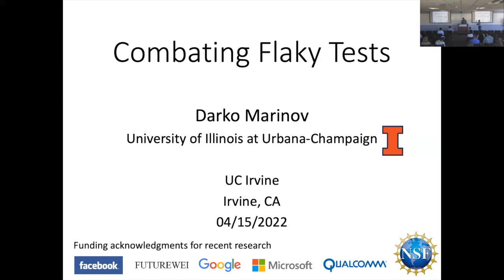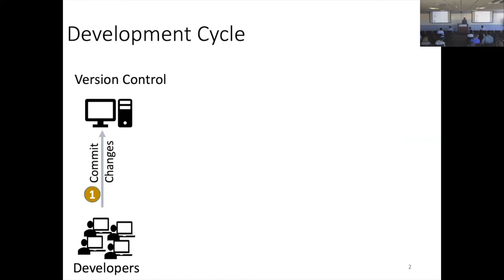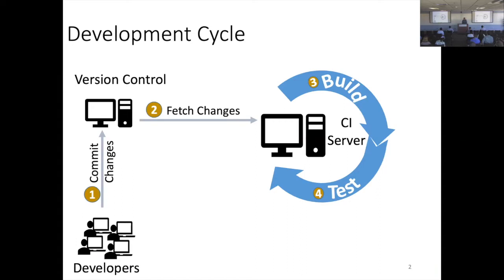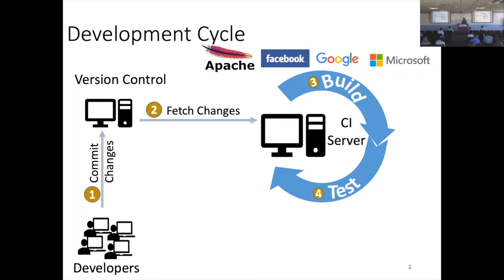Thank you for the introduction. I'll be talking about combating flaky tests. If you don't know what flaky tests are, I'm going to introduce them. In the context of developing software, here's a brief introduction of how people write software: developers write some code, commit and push their changes to version control like GitHub, then continuous integration servers get those changes, compile or build the code, and start running tests — whether for open source or proprietary software. We refer to this as regression testing: you already have existing tests and you're running them to check if your changes broke something.